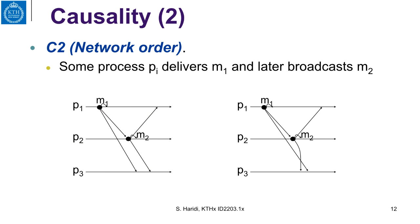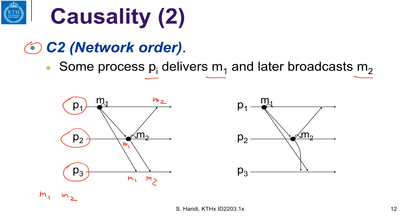For network order: some process PI delivers M1 and later broadcasts M2. M1 is broadcast and delivered to P2, and then P2 broadcasts a message, so M1 causally precedes M2. In execution A, at P1 M1 is delivered before M2, and at P3 M1 is delivered before M2 — this satisfies network order. In execution B, M2 is delivered before M1, so execution B does not satisfy network order.